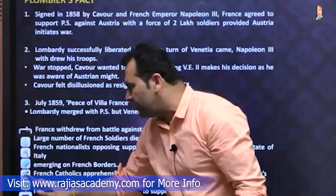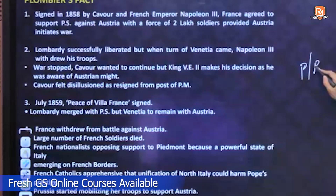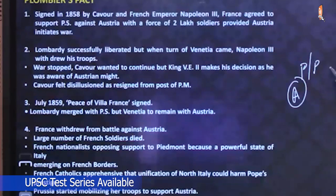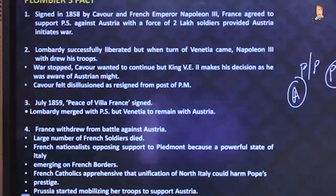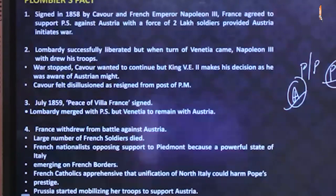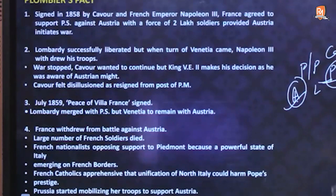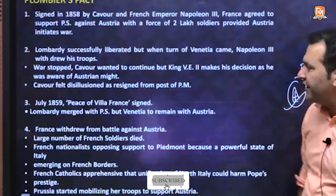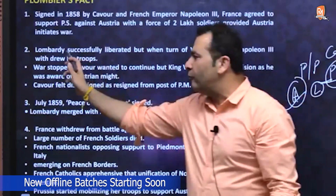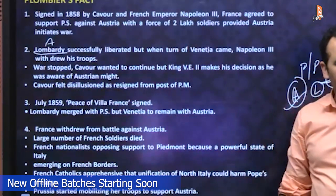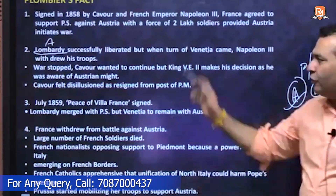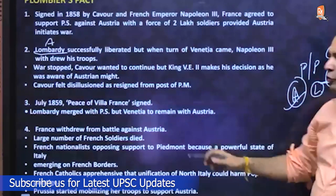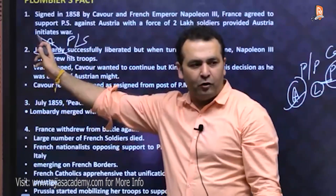Cavour felt disillusioned and resigned as Prime Minister. A peace of Villa Franca was signed in July 1859 and Lombardy merged with Piedmont-Sardinia, though Venetia still remained with Austria. France withdrew from the battle for four reasons: large numbers of French soldiers had died; French nationalists opposed supporting Piedmont as a powerful Italian state emerging on French borders could become an enemy; French Catholics feared united North Italy could threaten the Pope; and Prussia had started mobilizing troops to support Austria, risking a Europe-wide war.